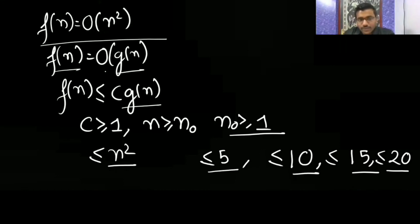That's why when some function is bounded by n², it's also bounded by n³, n⁴, n⁵, and even 2ⁿ exponential. Is it clear?